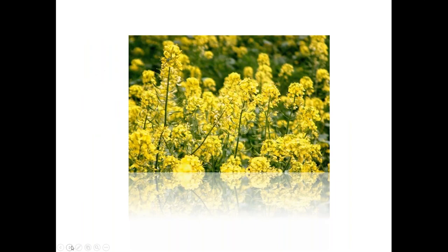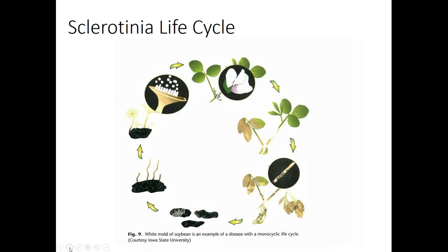Now switching gears to talk about Sclerotinia. Here is the interesting and complex life cycle of a very primitive pathogen with a wide host range. The life cycle is shown in the soybean crop to help remember that this disease affects virtually all broadleaf crops. It starts with sclerotia — those little black structures that survive from year to year and can live near the soil surface for three years or longer.